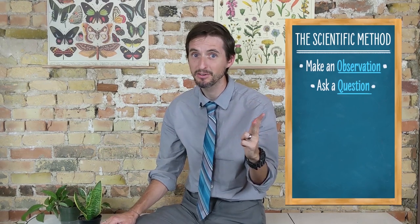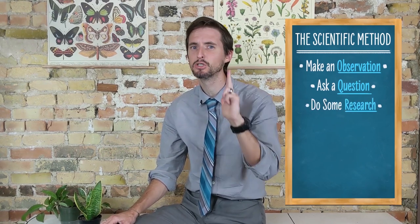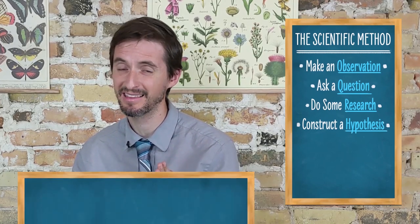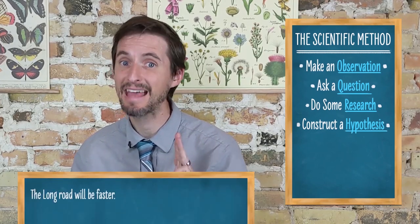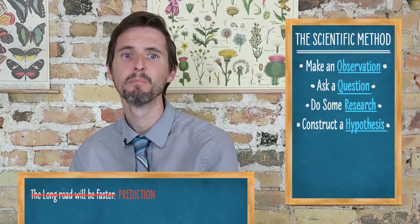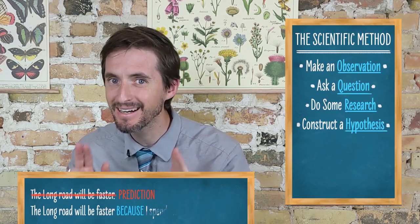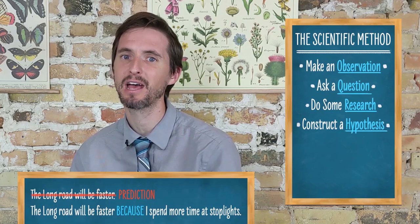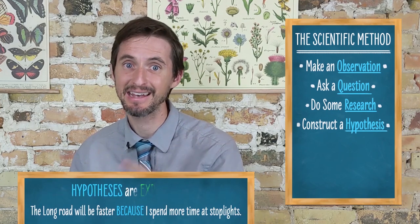I did some research. The speed limits were the same, but the short road had more stoplights. I constructed a hypothesis based upon my research. Notice that my hypothesis wasn't simply that the long road would be faster. That is a prediction. But that it would be faster because I spend more time at stoplights. That is an explanation, and hypotheses are explanations for phenomena.